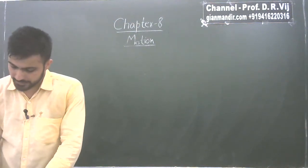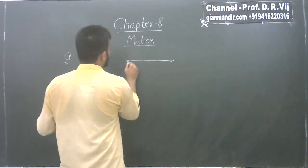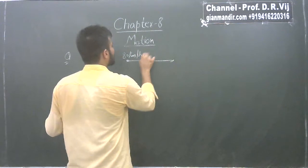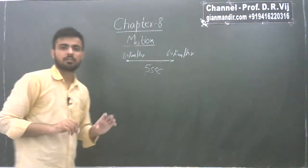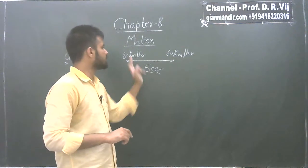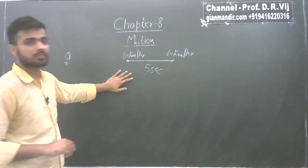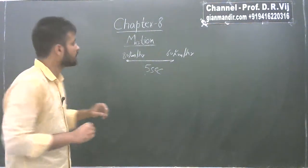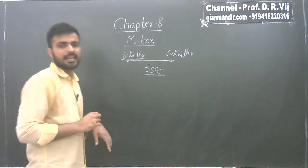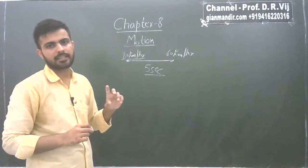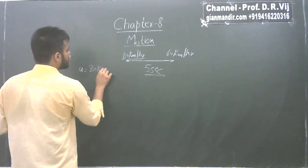The second question: a bus decreases its speed from 80 km/h to 60 km/h in 5 seconds. Find the acceleration. Be careful about units — the velocity is in km/h and time in seconds. So convert to m/s. u = 80 × 5/18 m/s, v = 60 × 5/18 m/s, t = 5 seconds.